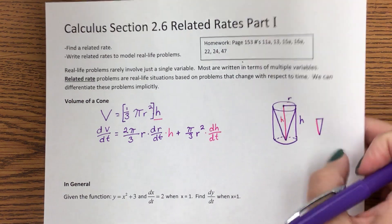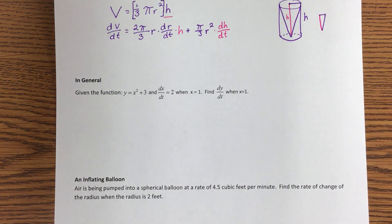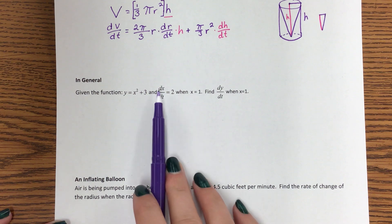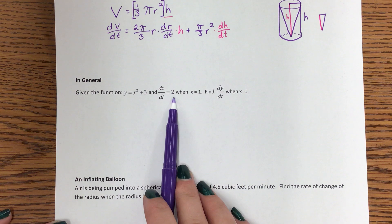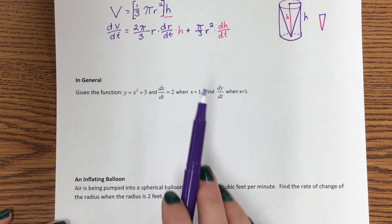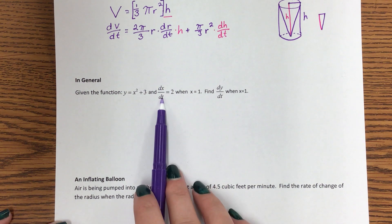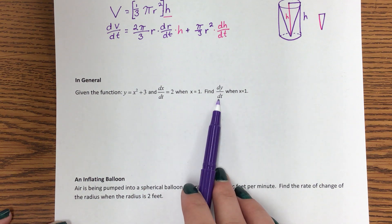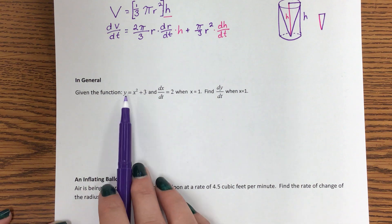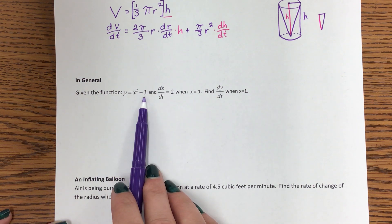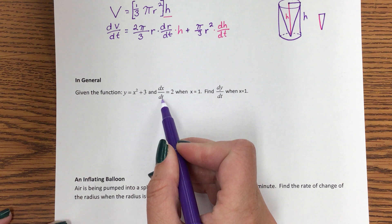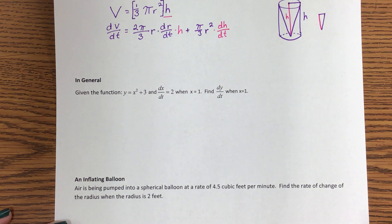This problem is not a word problem but it is a related rates problem. We're given dx/dt equals 2, which means the change in x with respect to time is 2 when x equals 1. We want to know what dy/dt equals. We're going to take the derivative of y equals x squared plus 3 with respect to t — we know it's with respect to t because all the denominators have dt's.